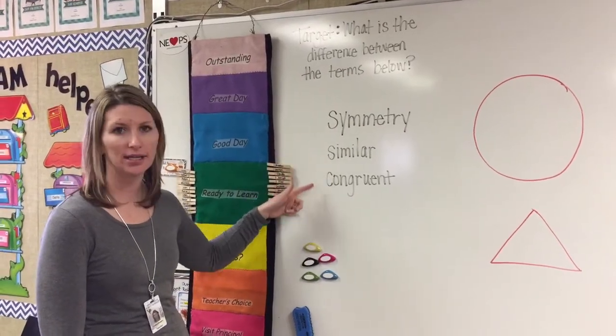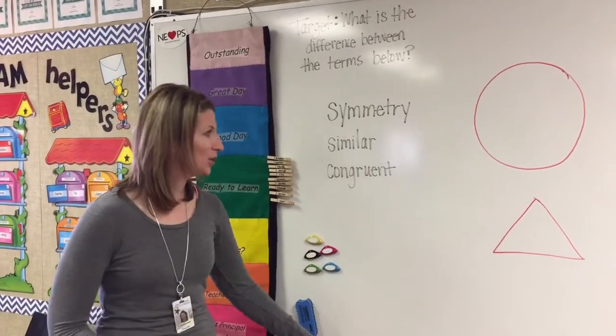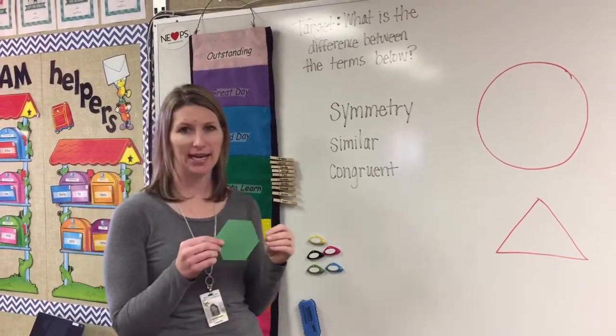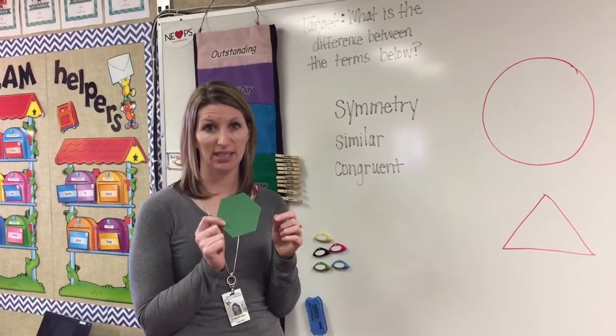Symmetry, similar, and congruent. So first I'm going to talk about symmetry. And symmetry is when you have an object and you can divide it into two equal parts where both sides look exactly the same.